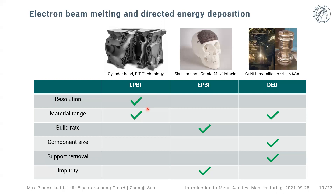For Electron Beam Melting, most products go into the medical sector — such as skull implants or hip implants. The entire chamber has to be vacuumed, so in terms of part impurity tolerances this process is actually the best. The surface tends to be a little rougher compared to laser systems, but for implants those rough surfaces are actually very desirable for cell ingrowth and cell development, which turns into a strength for this technique in the medical field.